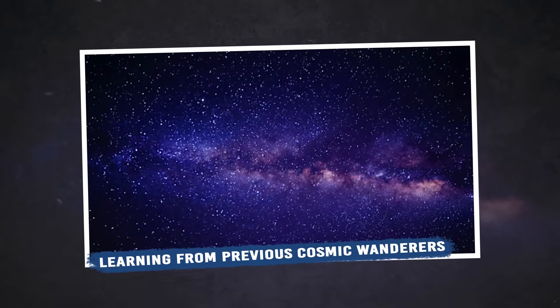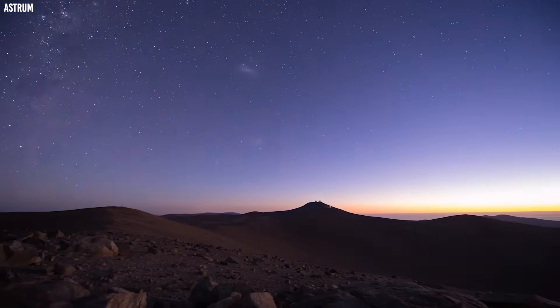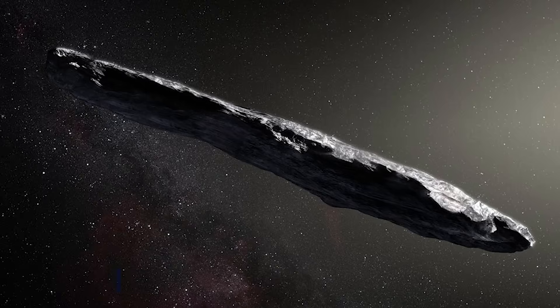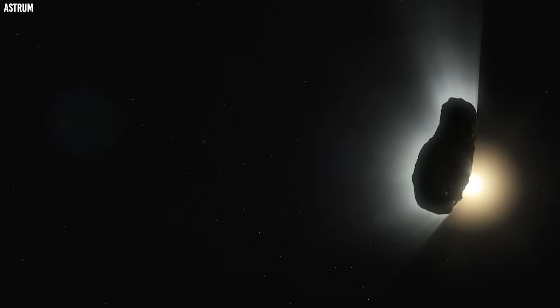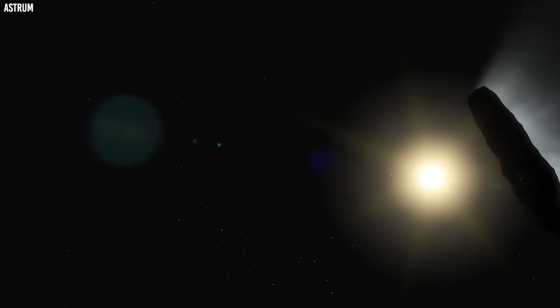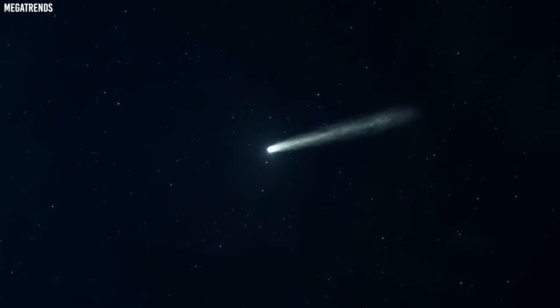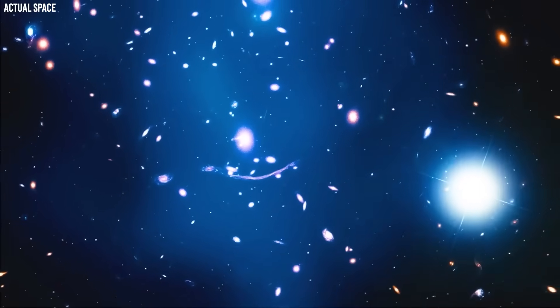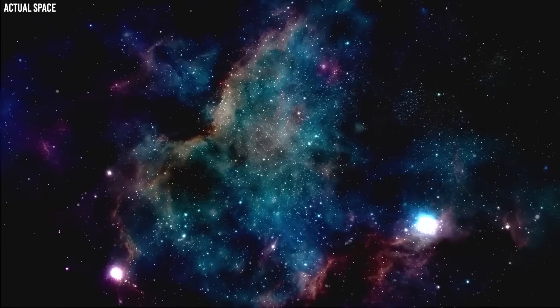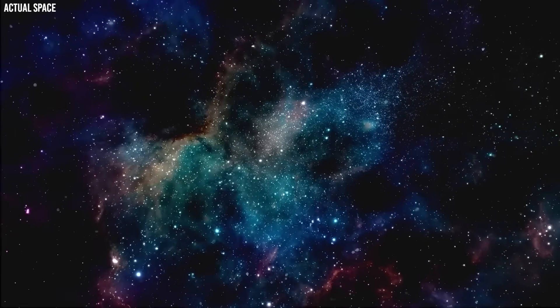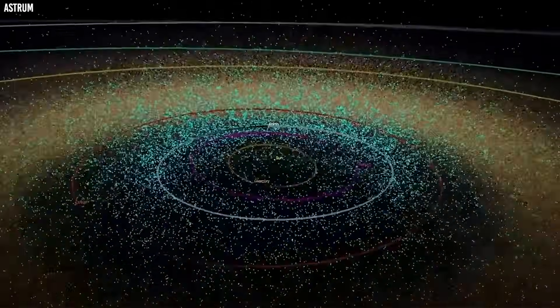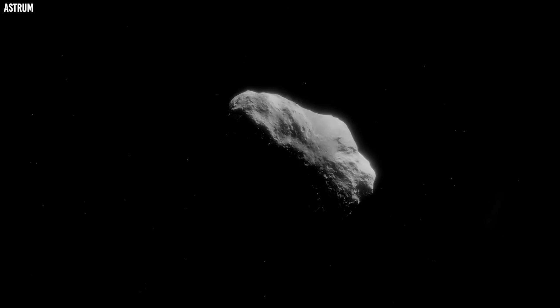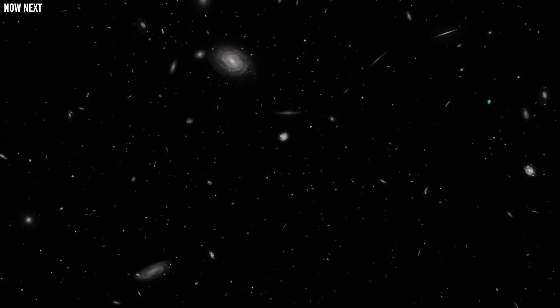Learning from previous cosmic wanderers. The fascinating story of interstellar object research truly began with the shocking discovery of Oumuamua, which caught the entire scientific community completely off-guard with its unprecedented and bizarre properties. This first confirmed visitor from another star system had an extremely elongated, cigar-like shape that was unlike anything previously seen in our solar system. It tumbled chaotically through space, while moving at velocities that immediately proved it didn't originate from our local cosmic neighborhood.